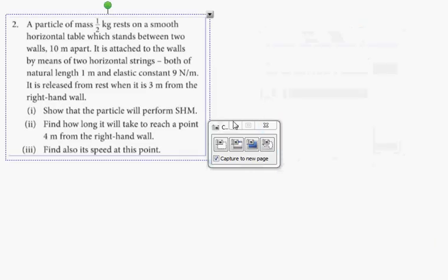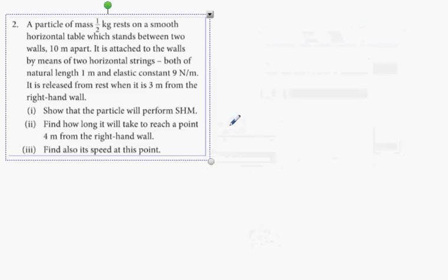So what we have here is question 2. A particle of mass 2.5 kg rests on a smooth horizontal table, stands between two walls 10 meters apart. It is attached to the walls by means of two horizontal strings, both of natural length 1 meter and elastic constant 9 newtons per meter. It is released from rest when it is 3 meters away from the right hand wall. Show that the particle performs simple harmonic motion.